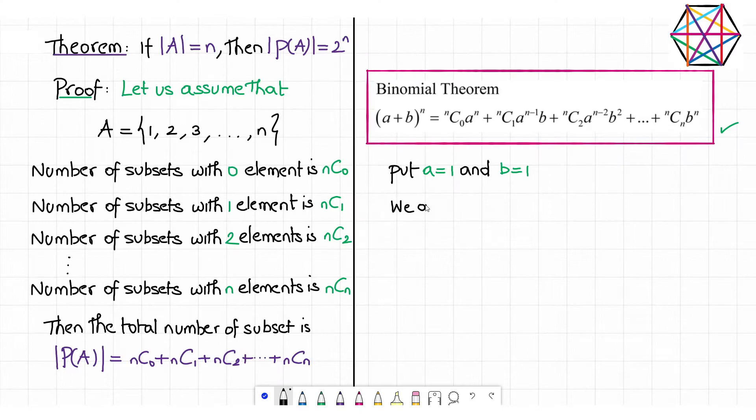we get (1 plus 1) to the power n equals n choose 0 plus n choose 1 plus n choose 2 so on up to n choose n. Therefore we get cardinality of P(A) equals 2 power n. Hence proved.